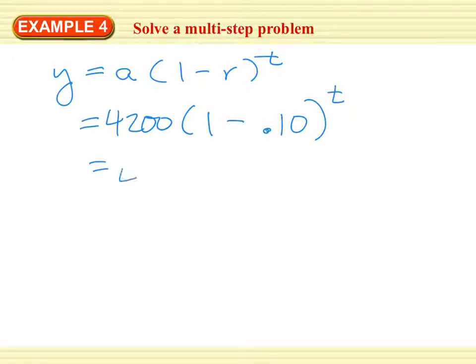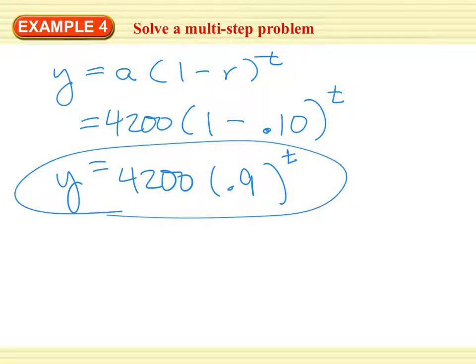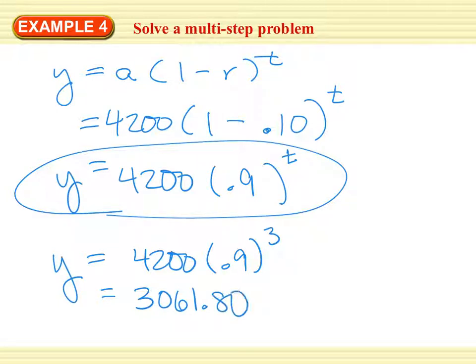So snowmobiles. A new snowmobile costs $4,200. The value of the snowmobile decreases by 10% each year. So this right here is my model, 0.9. That's a number between 0 and 1, right? It can be a fraction, to the t. So there is my model. So now we know when t equals 3, the snowmobile's value is 3,061.80. So that's the answer to one of them.